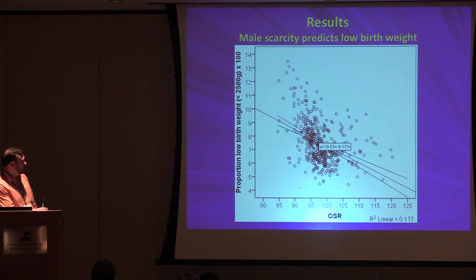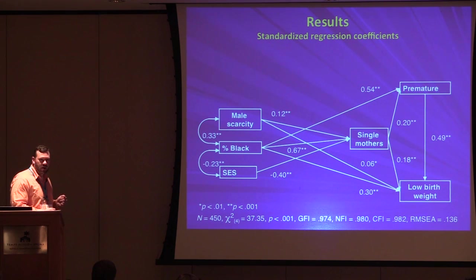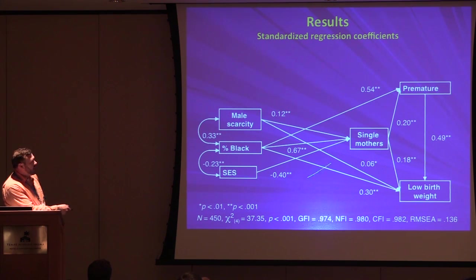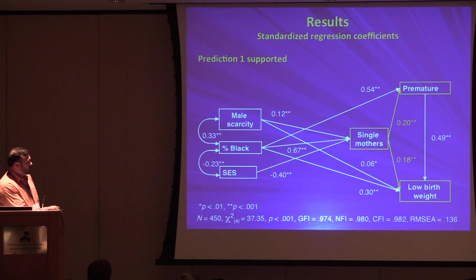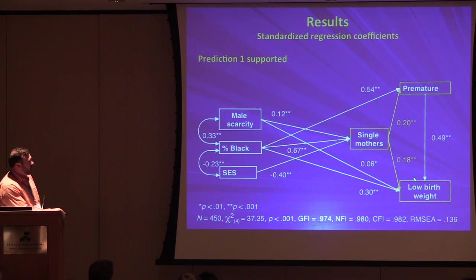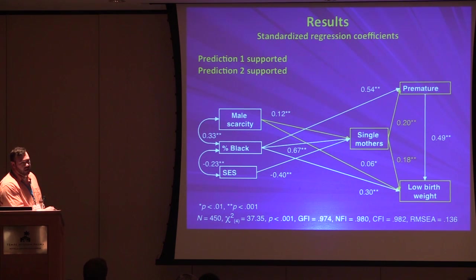Male scarcity also predicts low birth weight at the bivariate level. Using structural equation modeling and path modeling to capture the complexity of these relationships, I found that the proportion of households with children headed by single mothers — my demographic indicator of ambient paternal investment — is a significant predictor of the proportion of births that are premature and low birth weight, even accounting for other known sociodemographic predictors. Male scarcity significantly predicts the proportion of single mothers, yielding a mediated relationship.